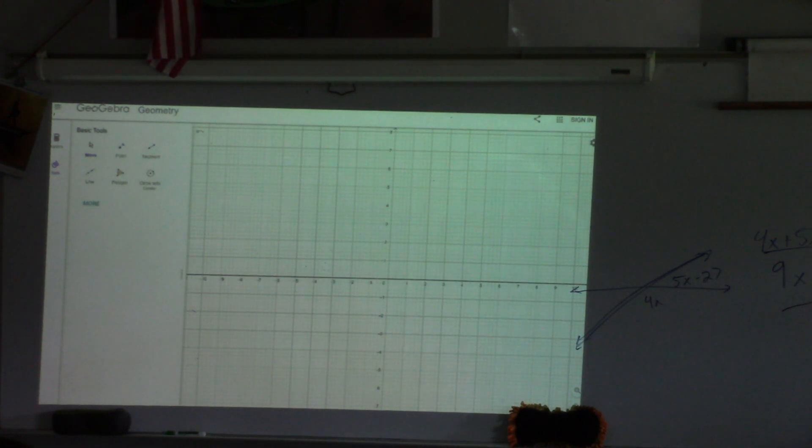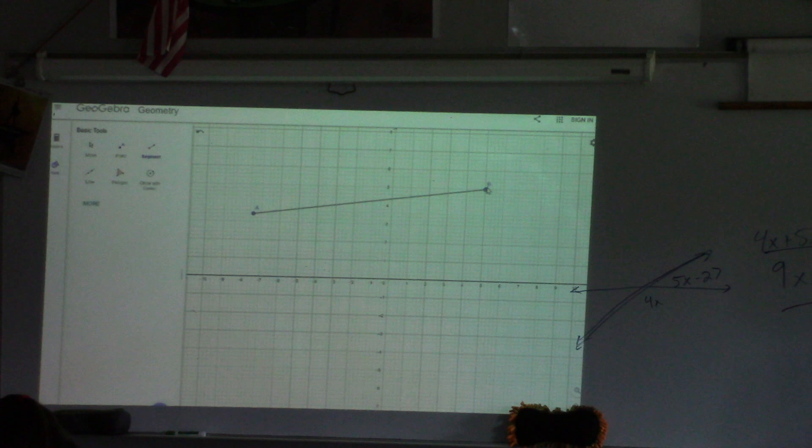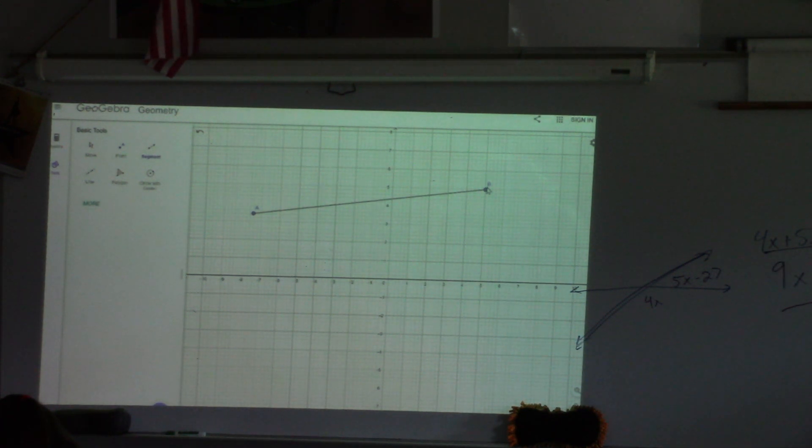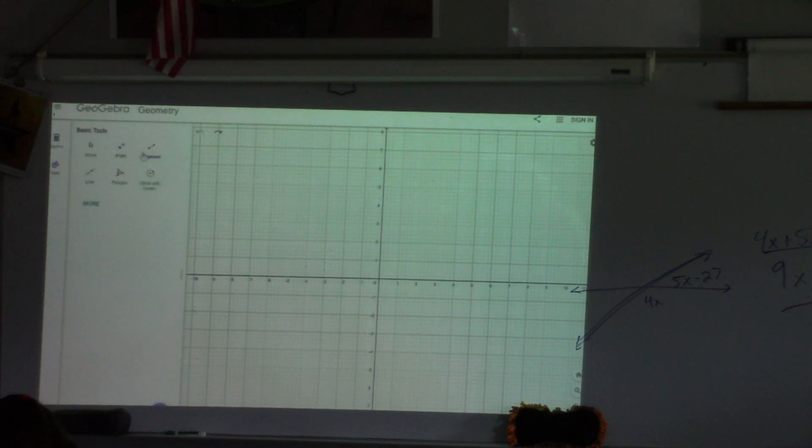So create a segment A-B. You see right here where it says segment? Click on it. It doesn't matter where you put it. Just click. It makes A, drag it, and it makes B. So click on segment, then click. It makes A. Move it around, and there's your B. It doesn't have to be the same as mine. It could have been very different. I could have done it like this. There's my A-B. It just needs a segment A-B on there.